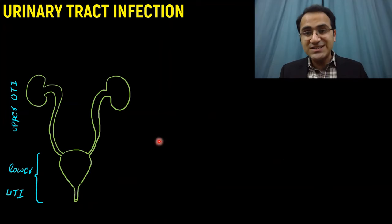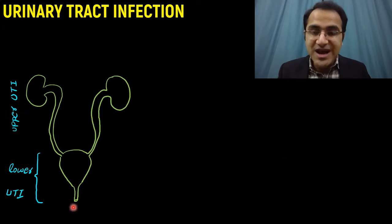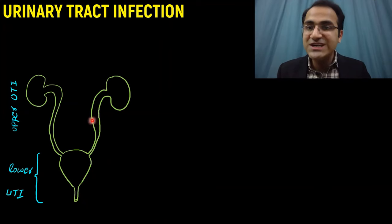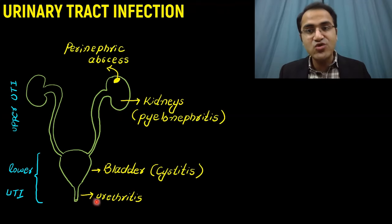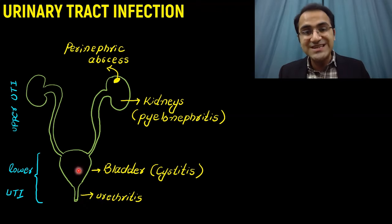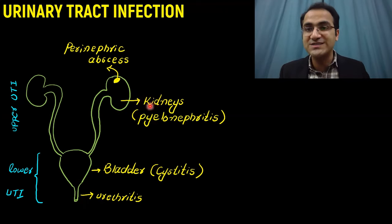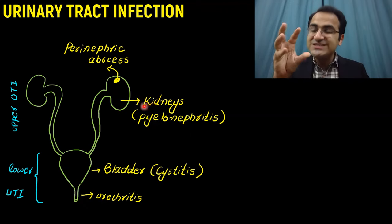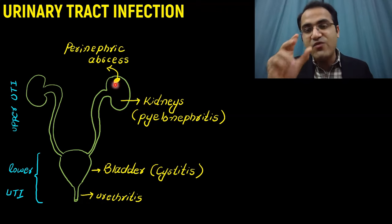Urinary tract infection is classified into lower UTI and upper UTI. In lower UTI, the urethra and bladder are involved; in upper UTI, the kidneys are involved. When bacteria enters the urethra, it causes urethritis. It then ascends upward causing bladder infection, resulting in cystitis. When it ascends further toward the kidneys, that is called pyelonephritis, and sometimes it results in abscess formation called perinephric abscess.